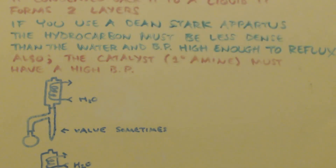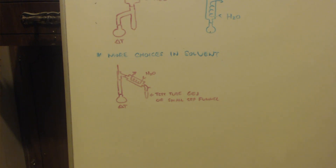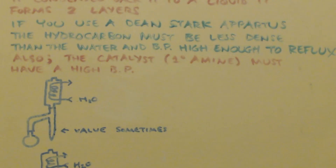Benzaldehyde has a high boiling point, so does nitroethane — nitroethane boils at about 112-115°C. You want the azeotrope boiling point to be lower than both of your reagents, but not so low that you're not refluxing at a hot temperature. Aim for somewhere between 70°C and 90°C for the azeotrope boiling point.